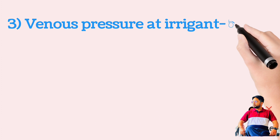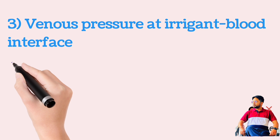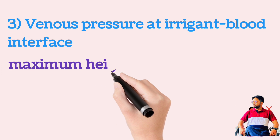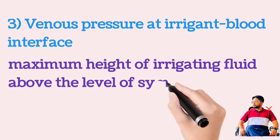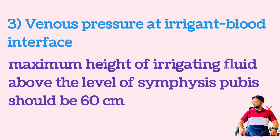Venous pressure at the irrigant-blood interface is also a factor. The irrigant fluid bag should be at a maximum height of 60 cm or 2 feet above the level of the pelvic symphysis, leading to a hydrostatic pressure of 60 cm of H₂O, which is the maximum allowed.